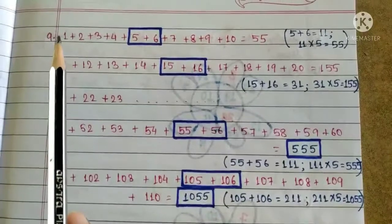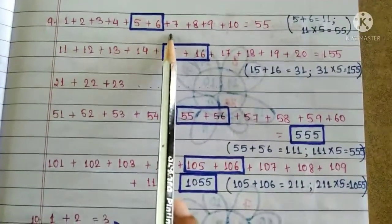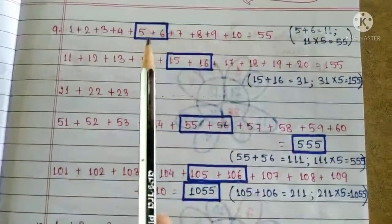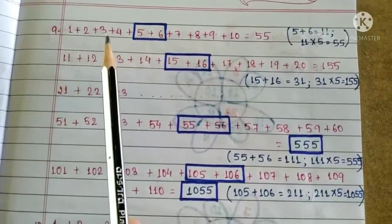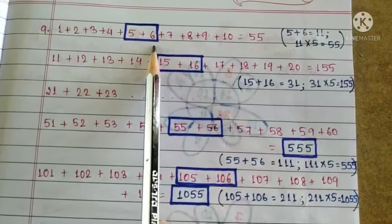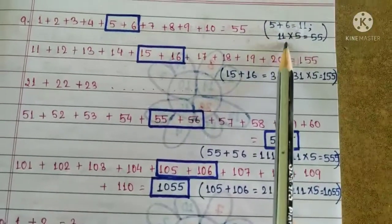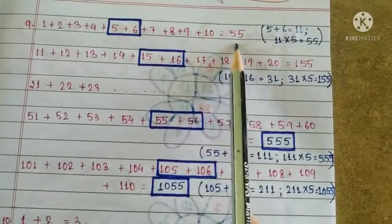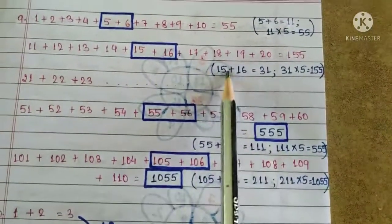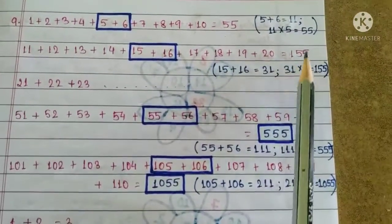Question 9: Here we have 1 plus 2 plus 3 plus 4 plus 5 plus 6 plus 7 plus 8 plus 9 plus 10 equals to 55. We are choosing the 5th and the 6th number. 5 plus 6 is 11 multiplied by 5 is 55. Again, here also we are choosing the 5th and 6th number. 15 plus 16 is 31. 31 multiplied by 5 is 155.